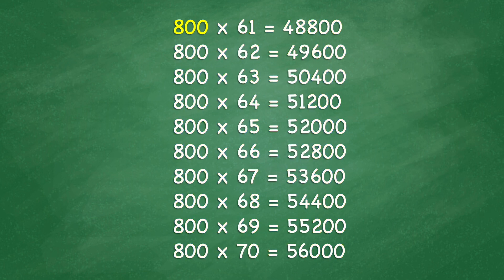800 times 61 equals 48,800. 800 times 62 equals 49,600. 800 times 63 equals 50,400. 800 times 64 equals 51,200.